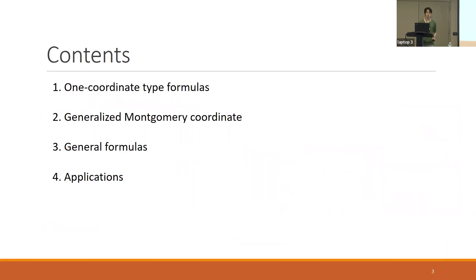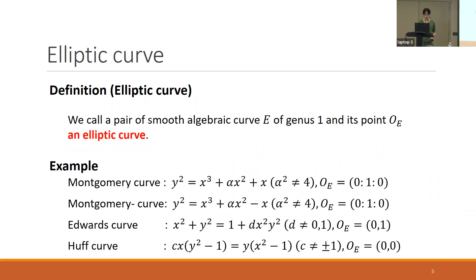Here are the contents. First I introduce the one-coordinate type formulas. I define the fd-curve. We call a pair of a smooth algebraic curve E of genus one and its point O_E an fd-curve.